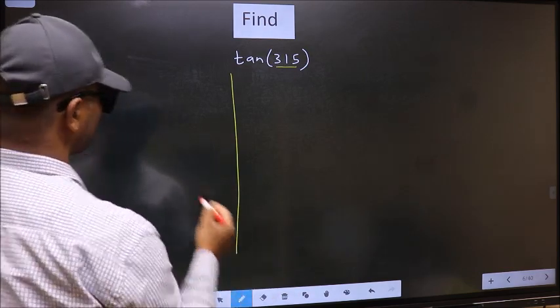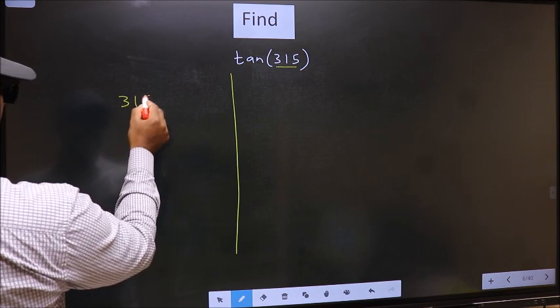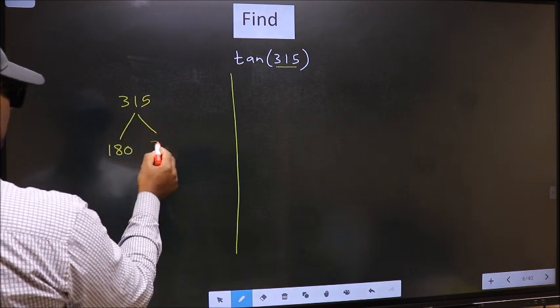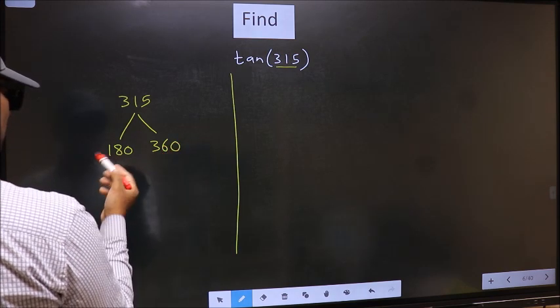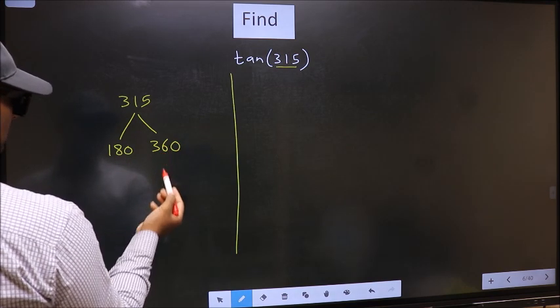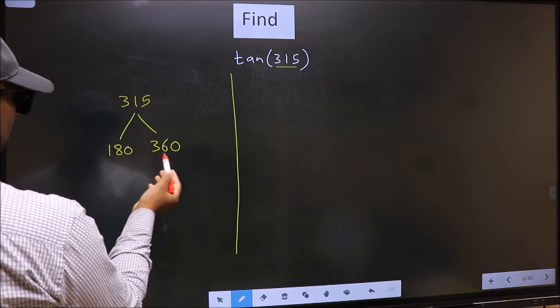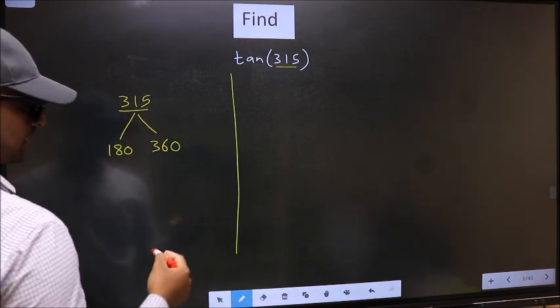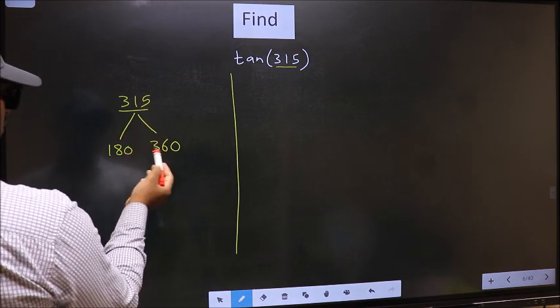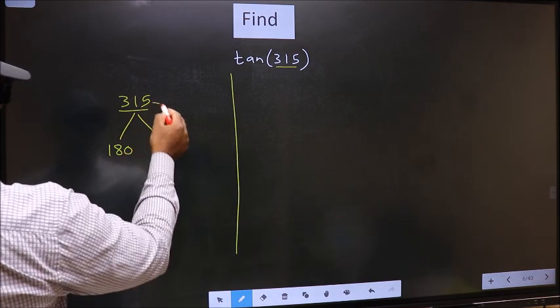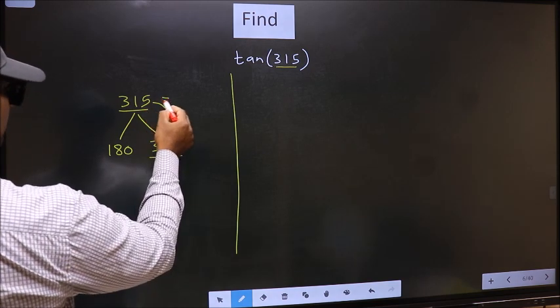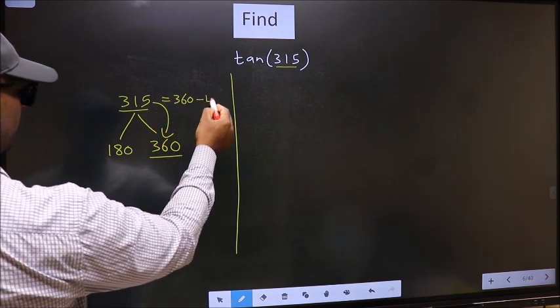Now we should check 315 lies between which two multiples of 180. What I mean is 315 lies between 180 and 360. This is 180 times 1. This is 180 times 2. Between these two numbers, 315 lies. Next, 315 is close to which number? This is close to 360. So in place of 315, now we write 360 minus 45.